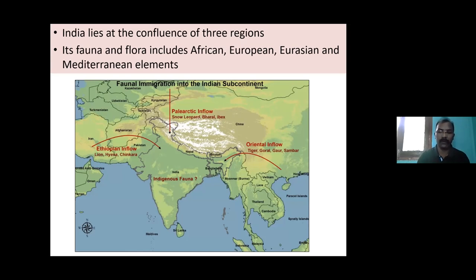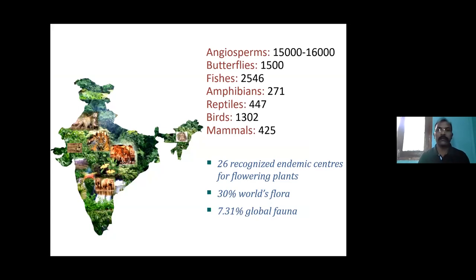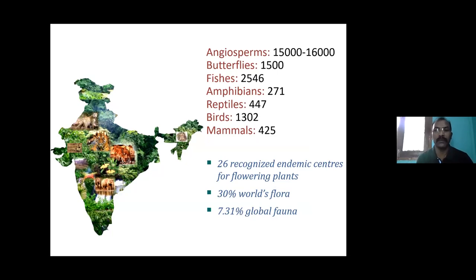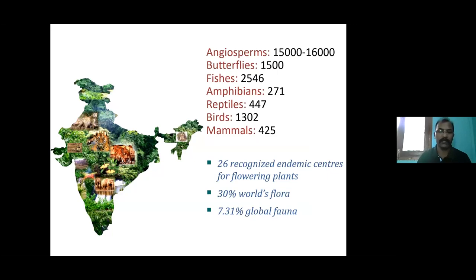India has about 26 recognized endemic centers for flowering plants, 30 percent of world's flora, and 7.3 percent of global fauna — a humongous species pool. The statistics cover angiosperms, butterflies, fishes, amphibians, reptiles, birds, and mammals, and people are adding more every day.